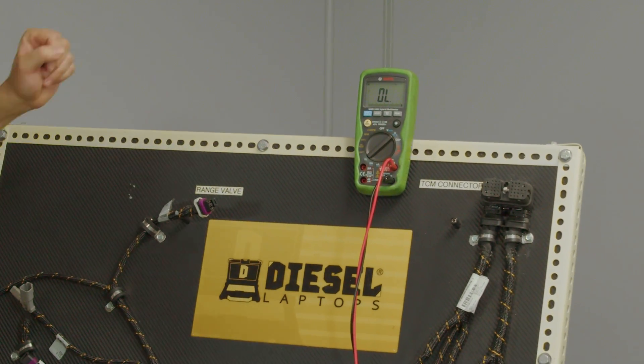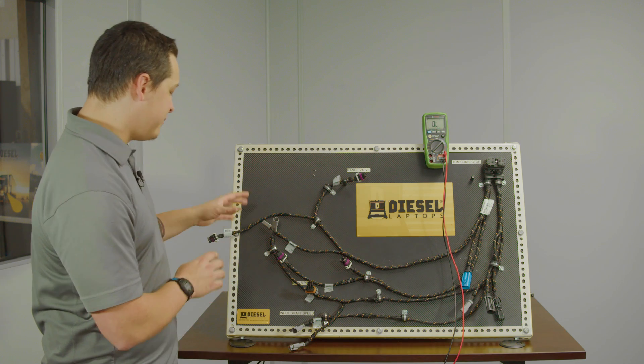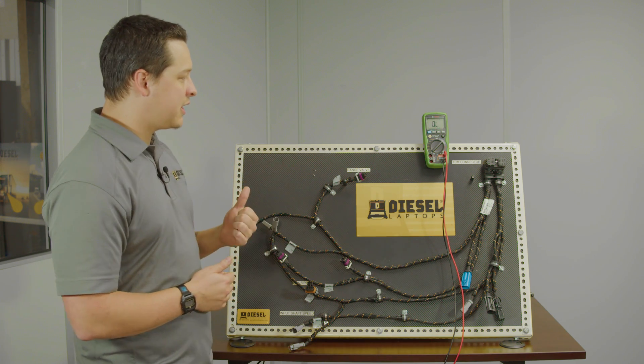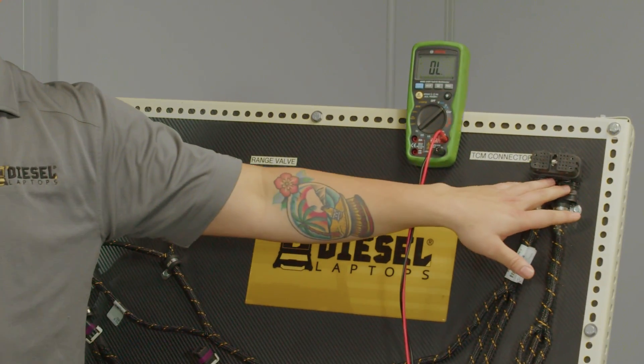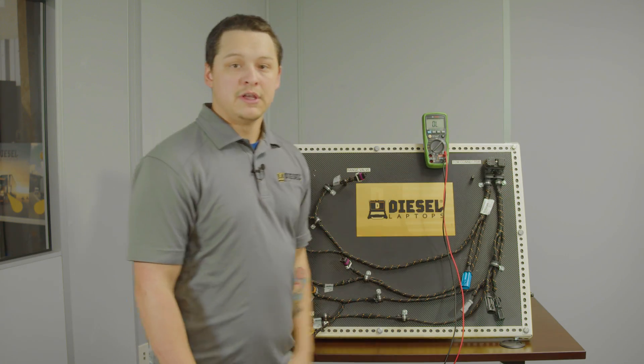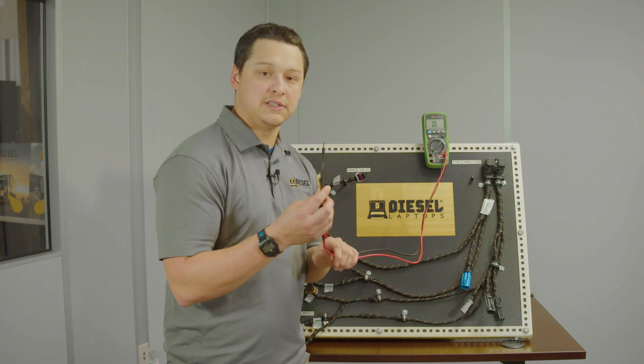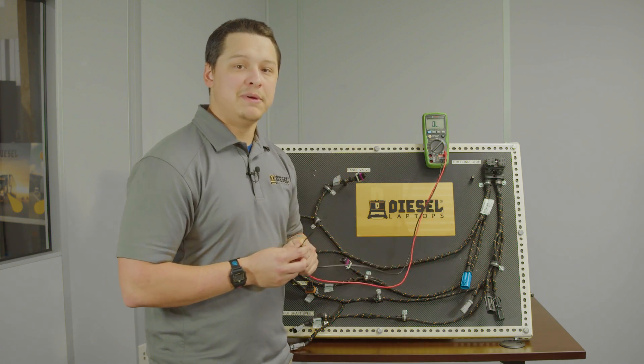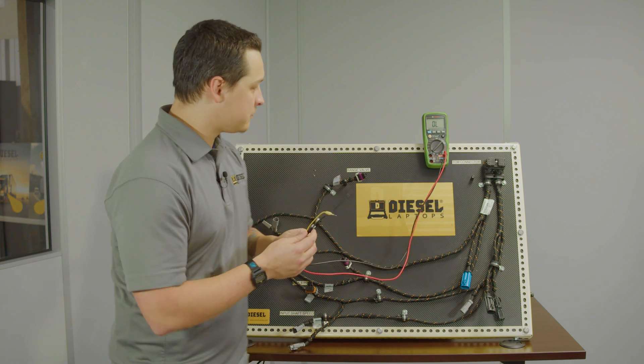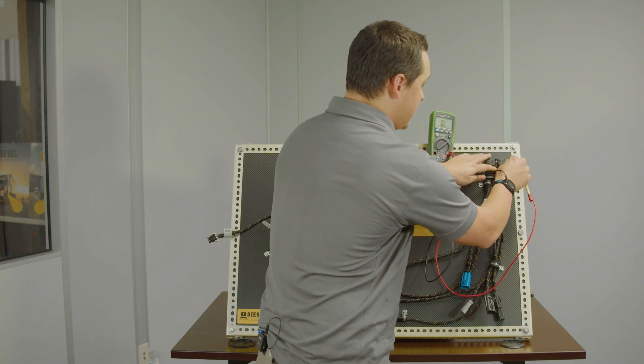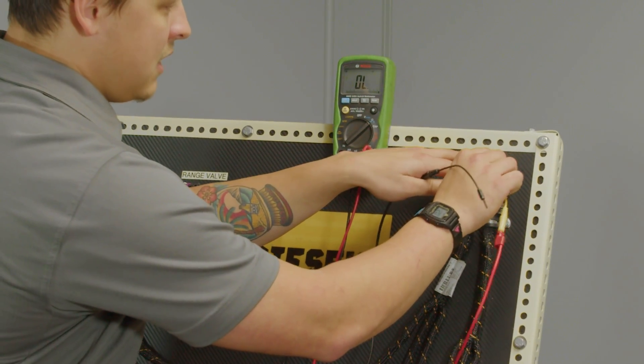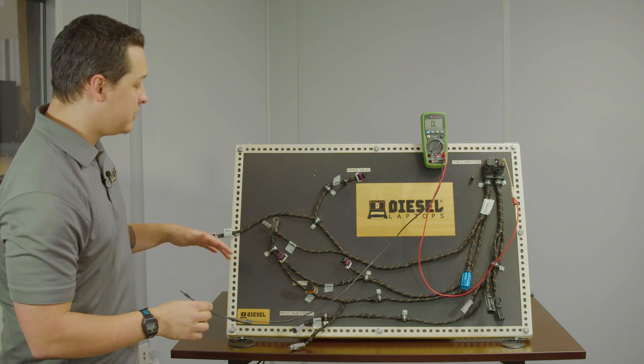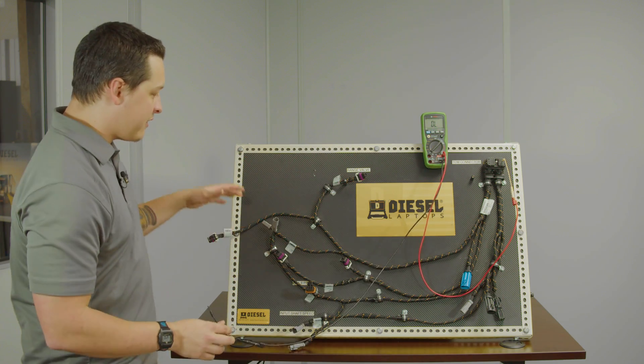In this case we're going to put it in continuity mode and now we will try and find our input shaft speed connector. I know it's a 2 pin Deutsch connector and I know on our TCM connector here we're utilizing pin 7. I already have my terminal test leads installed so now I can go ahead and put them into the proper pins. If you want more information on our terminal test lead kit be sure and check out our terminal test lead tech tip video. So we'll go ahead and put these in here, I'll put this one on pin 7. And then now I know I'm running to pin 1 on a 2 pin Deutsch connector. I've got three of them here on the board.